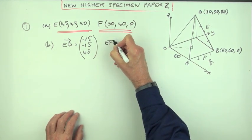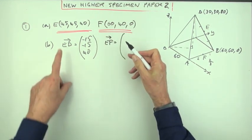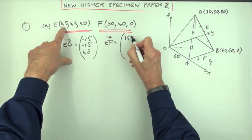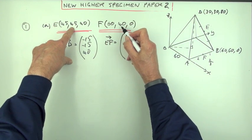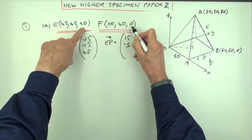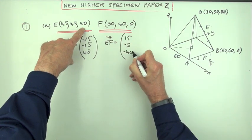Same with EF. How do you get from 45 to 60? That's forward 15. 45 to 40, that's back 5. 40 to 0, that's back 40.